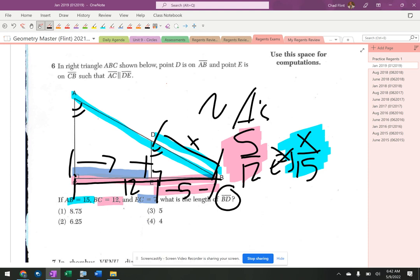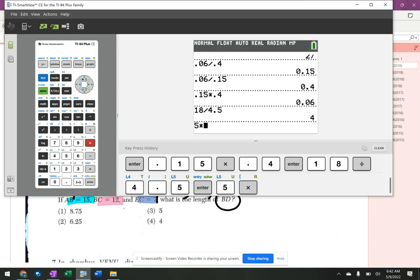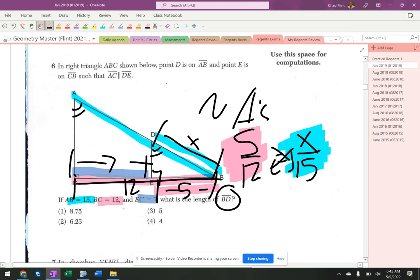So I cross-multiply, I get 5 times 15, I get 75, equals 12X.